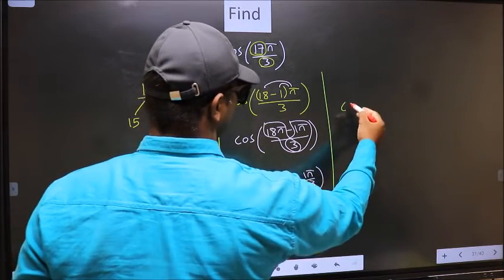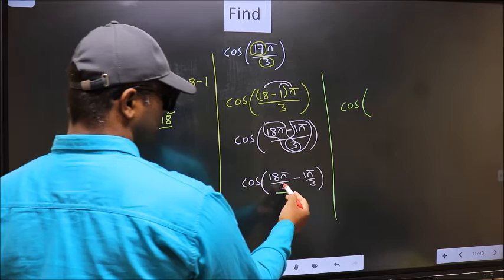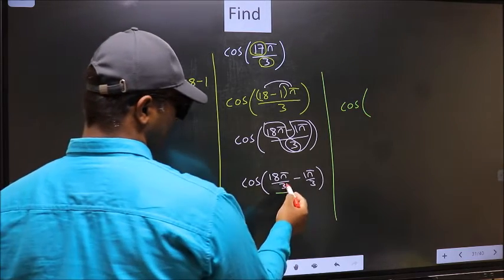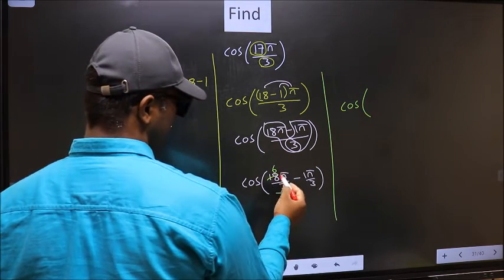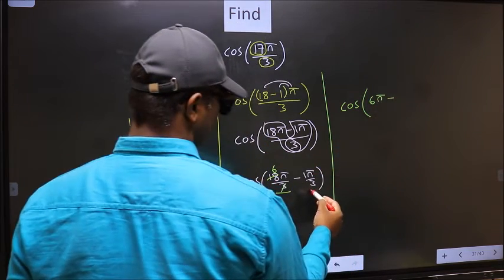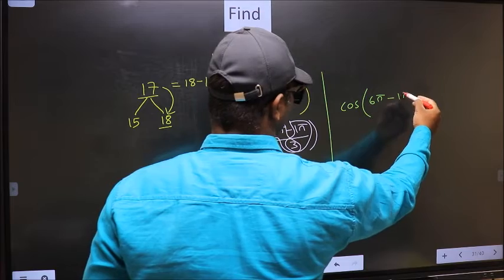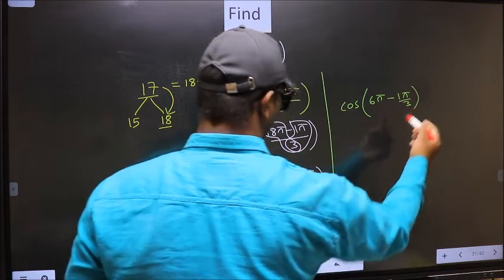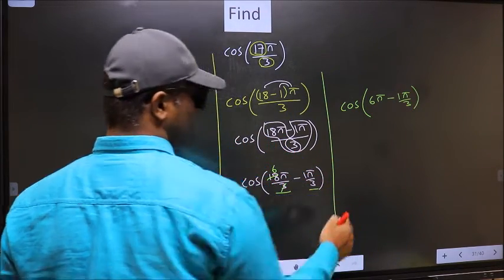Cos. Now here you should cancel. 3 ones, 3 sixes. So we get 6π minus this no change, 1π by 3. Next.